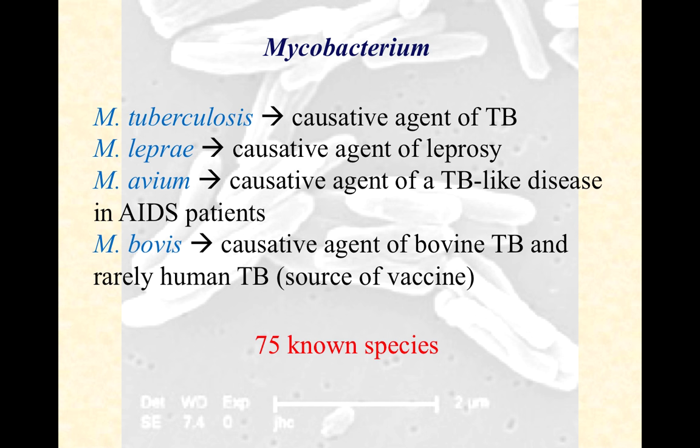Every now and then, rarely, we'll see M. bovis show up in the human population. M. bovis is what's used to develop the mycobacterium tuberculosis vaccine that we do not give here in the United States, but other parts of the world do have these vaccines. So lots and lots of species, four in particular, that seem to cause disease.